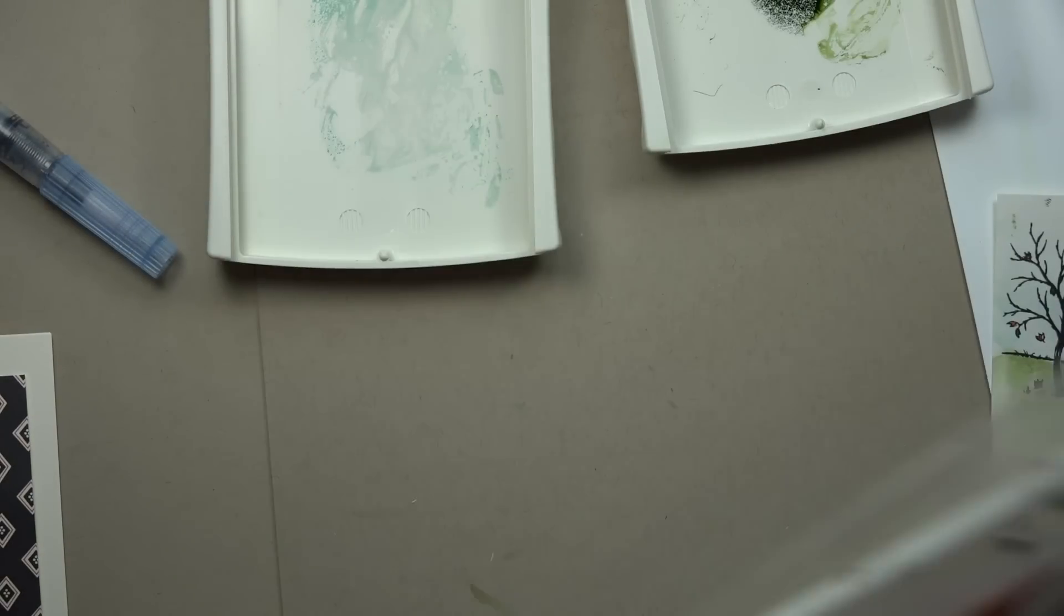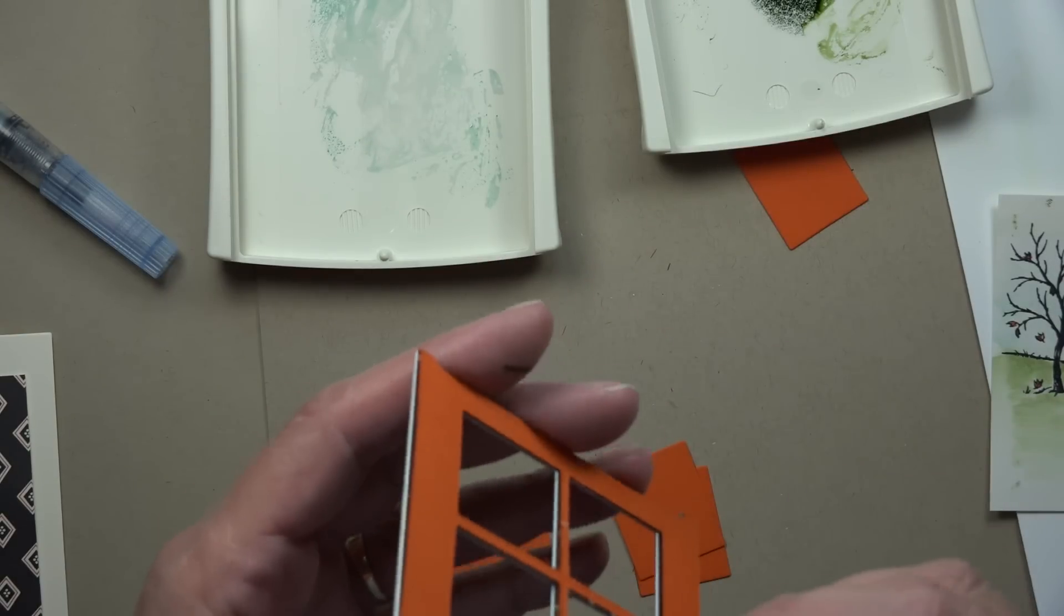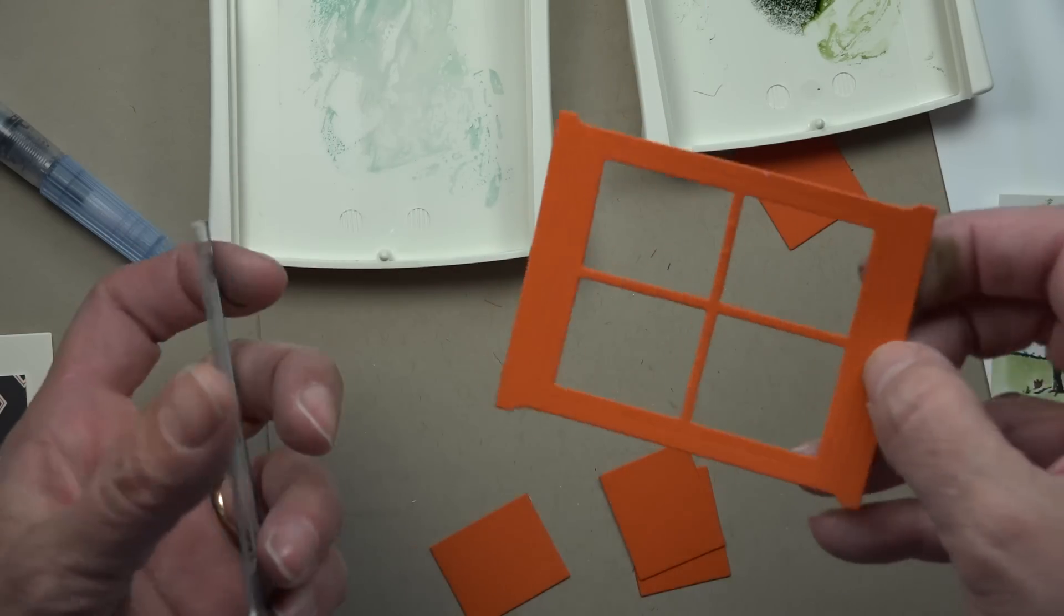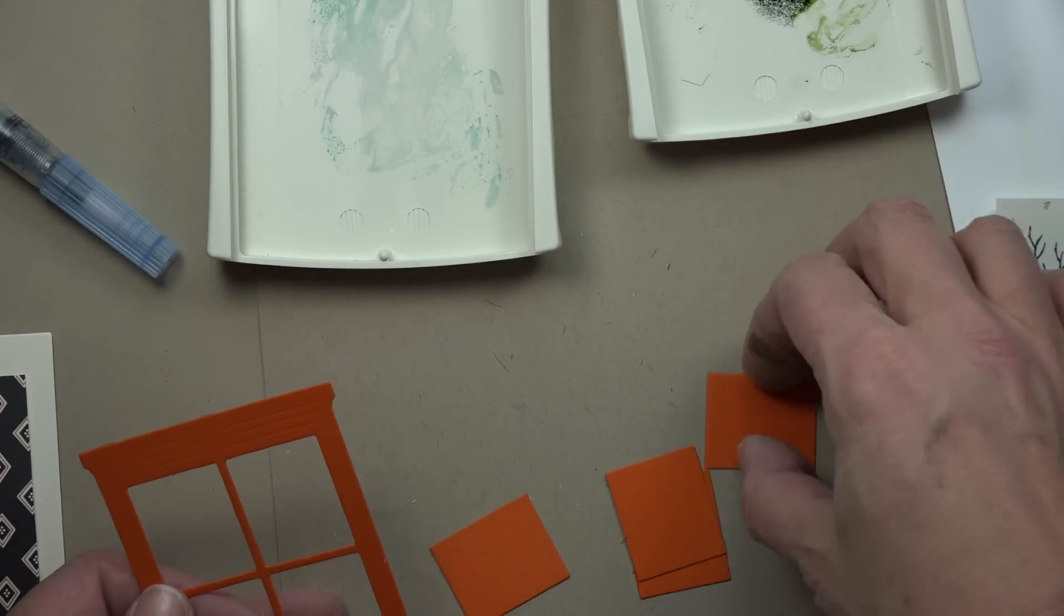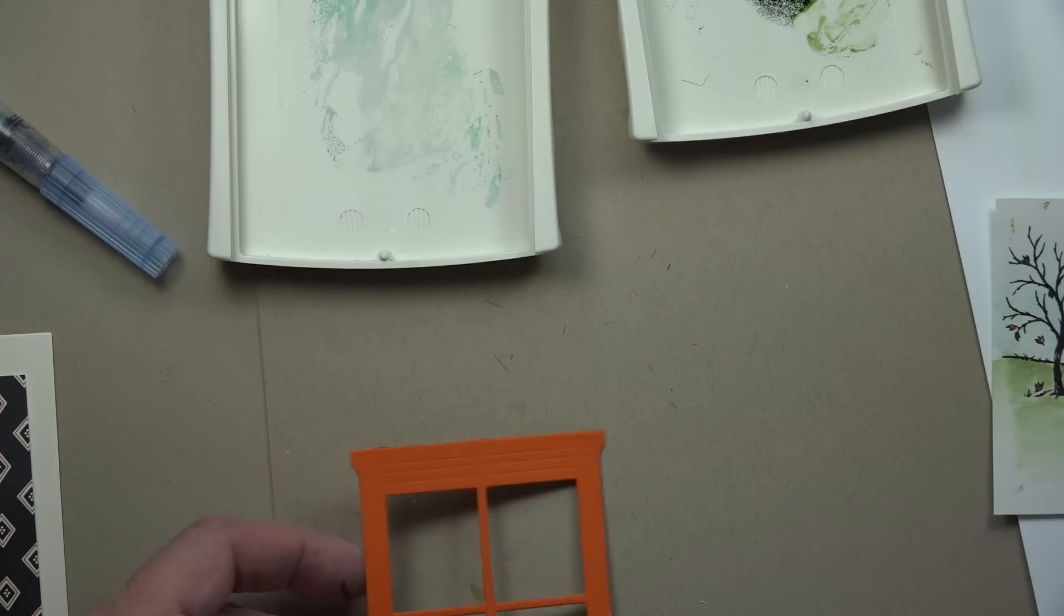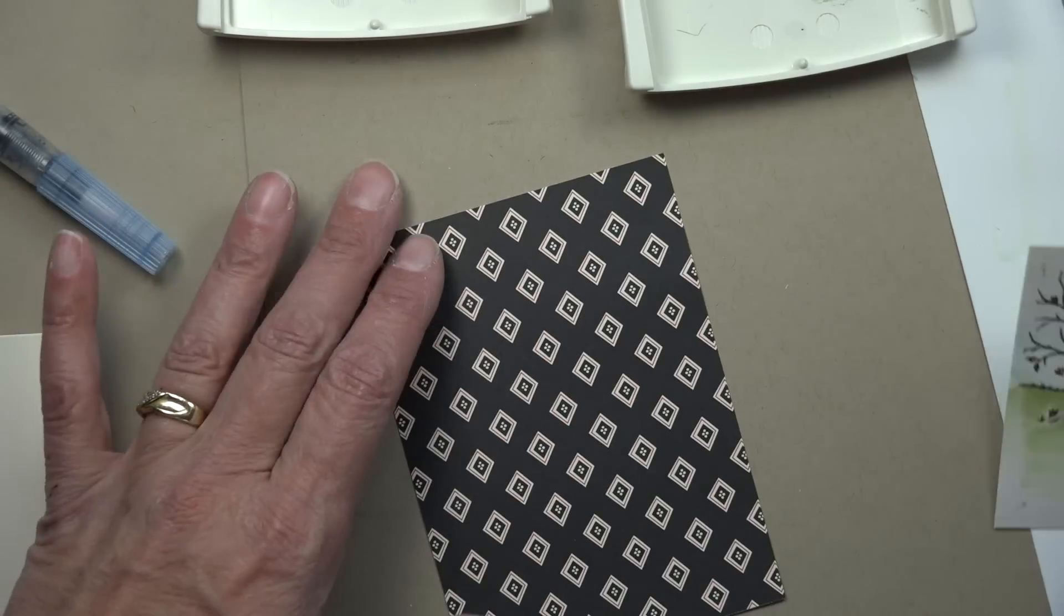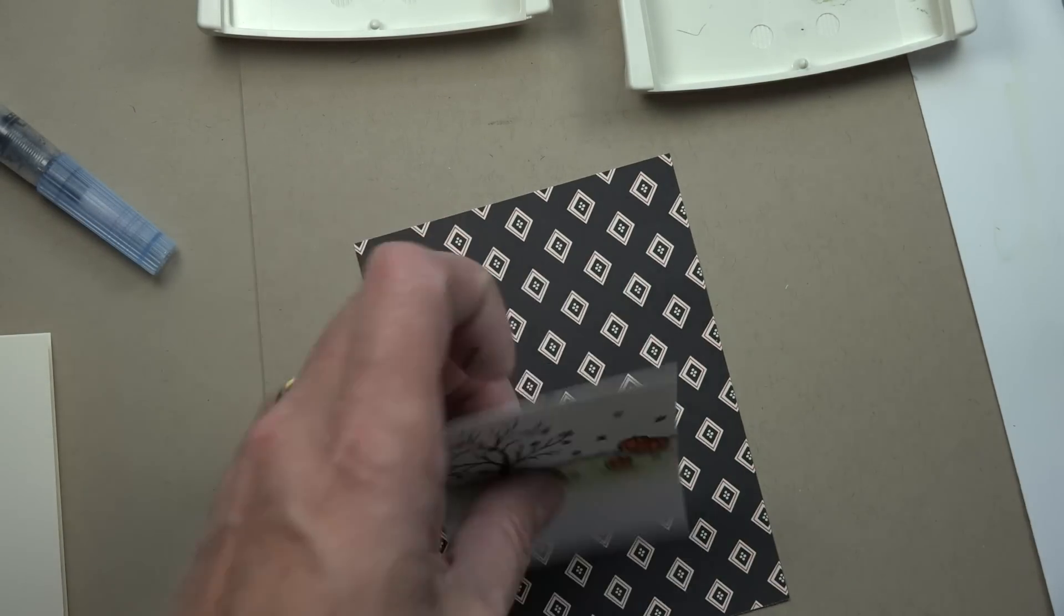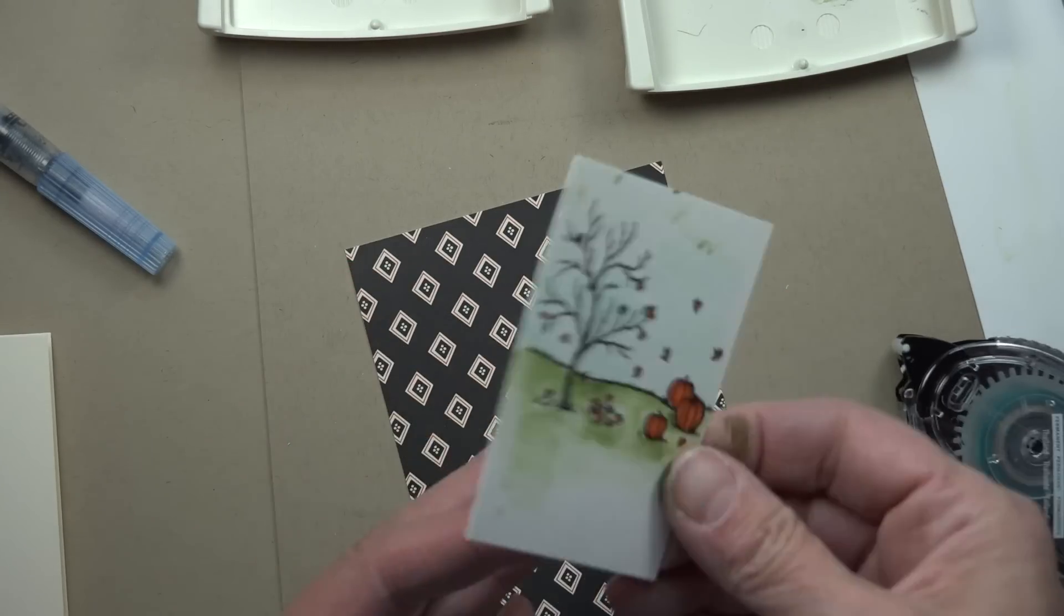Once I've got that cut out you're going to go ahead and just pull that off the platform. And then the window, mine actually just pops out which is great but if it doesn't it has these little holes that you can go ahead and poke out. So now I've got my window done and I've got all these little rectangles that I can use for something. I haven't decided what yet but I'll figure out something. I'm going to take my piece of designer series paper and I'm going to go ahead and attach the piece that I water colored.